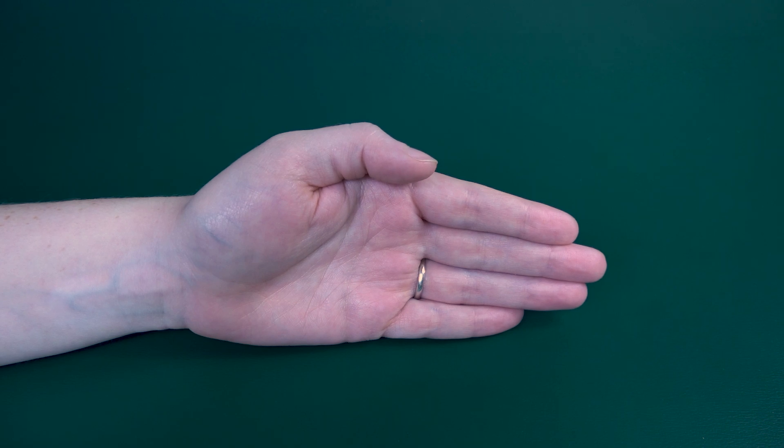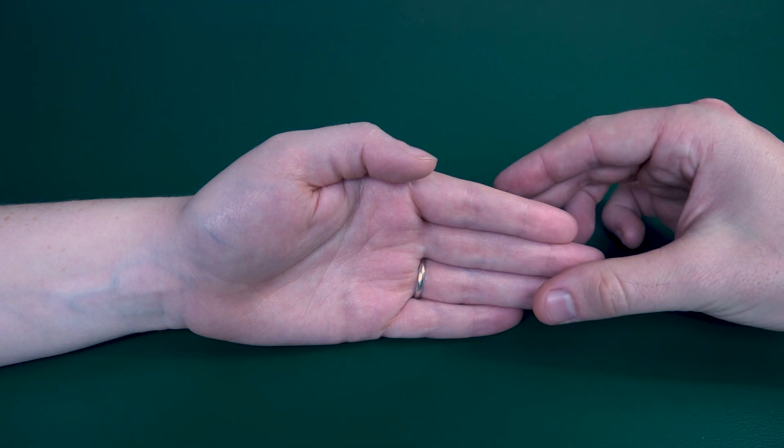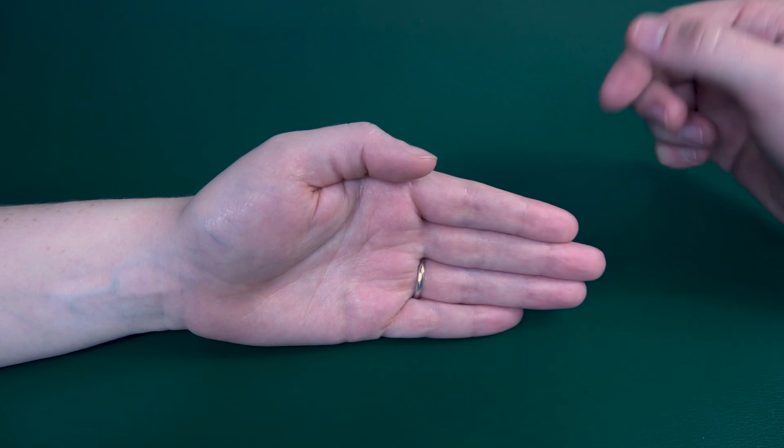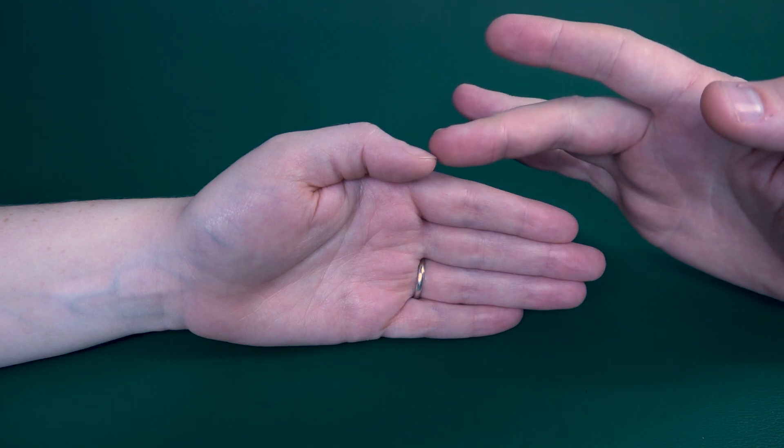Testing thumb radial abduction, also known as CMC extension. The patient's hand will be on a flat surface of the table in a neutral position, thumb resting on the second digit. First, have your patient perform thumb extension.